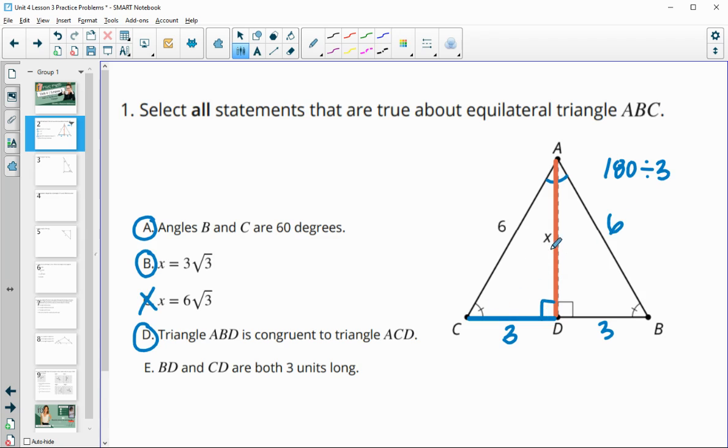We know it's equilateral. So this is 6. We know they share this side. So you could do by side, side, side. You could do by side, angle, side. You could say by angle, side, angle. Lots of ways to prove that those two triangles are congruent. And then BD and CD are both 3 units long. That's true because it cuts this 6 in half.